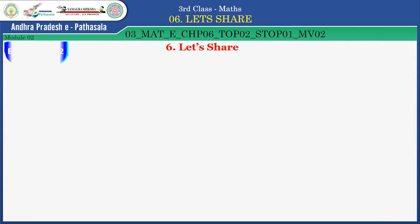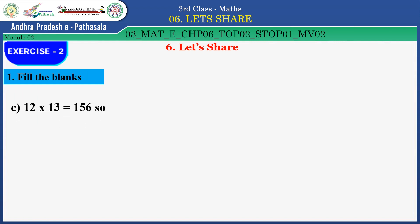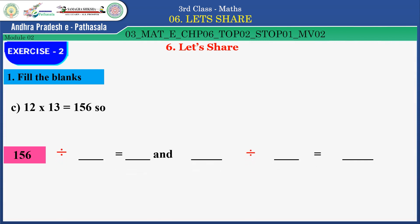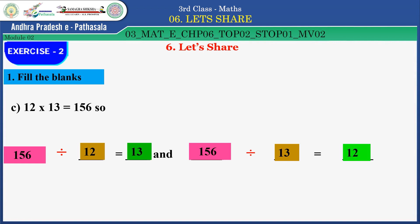Children, fill in the blanks. Given: 12 × 13 = 156. So, 156 divided by 12 equals 13 — that is one way. In another way: 156 divided by 13 equals 12. Very good, children.